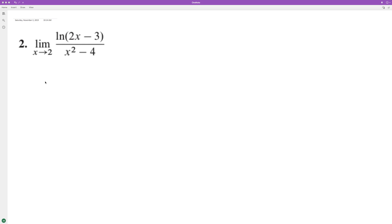If you notice here, if we plug in 2, we end up with natural log of 2 times 2, which is 4, minus 3, over 2 squared, which is 4, minus 4. This is natural log of 1. Natural log of 1 is 0, and then 4 over 4 is 0. So this is an indeterminate form.